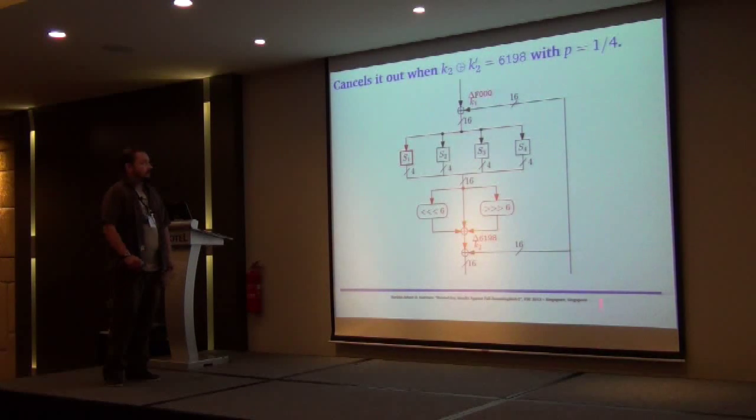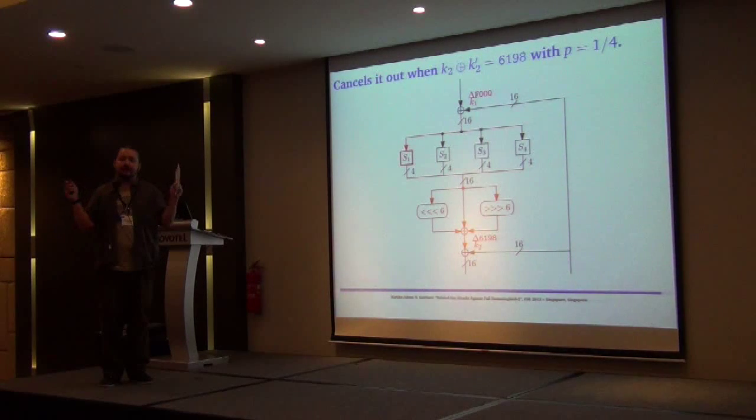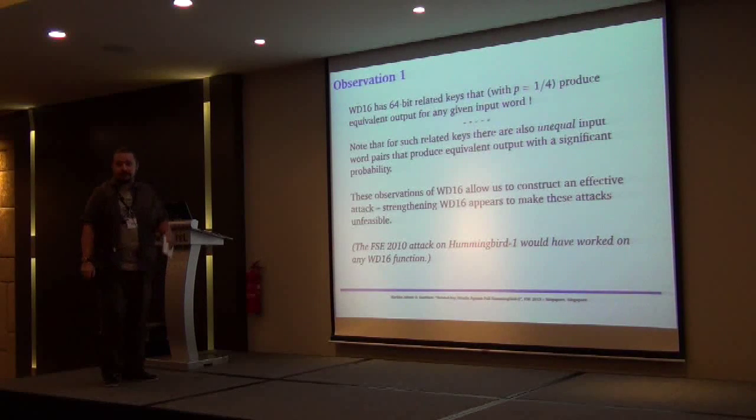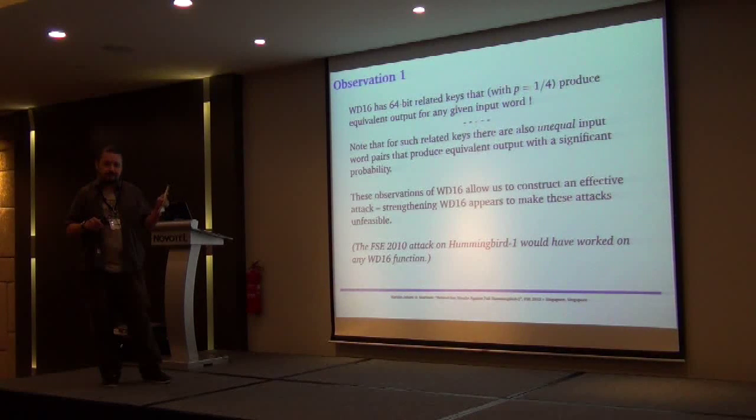We observe here that we have 64 related keys for these WD16 instances that actually produce the same output for these two related keys with probability one over four. Also note that if this difference is coming from the plaintext side, then we also have two plaintexts which produce the same output under related key with high probability. So we can have basically collisions in WD16 easily with high probability. I'm using both of these trivial properties in the attack, which is actually quite simple. The Hummingbird 1 attack was totally irrelevant. If you look more deeply into WD16, you could easily push that down to 2^32 against Hummingbird 1.